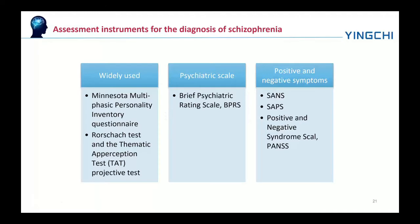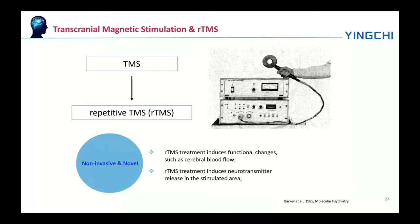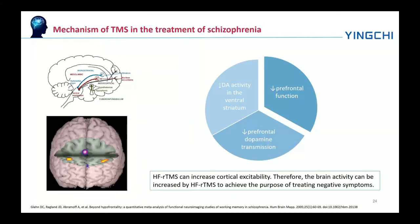These are some of the frequently used clinical assessments for schizophrenia. TMS, especially rTMS, is a non-invasive and novel protocol for schizophrenia. rTMS treatment includes functional changes such as cerebral blood flow, and induces neurotransmitter release in a stimulated area. The mechanisms of TMS in treatment of schizophrenia include a decrease of dopamine activity in the ventral striatum, a decrease of prefrontal dopamine transmission, and a decrease of prefrontal function. High-frequency rTMS can increase cortical excitability.